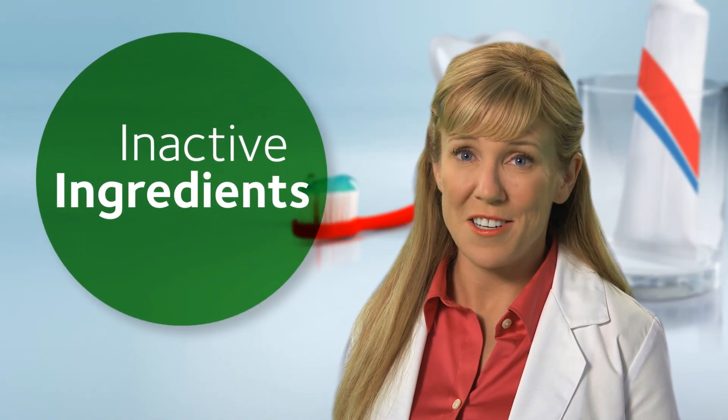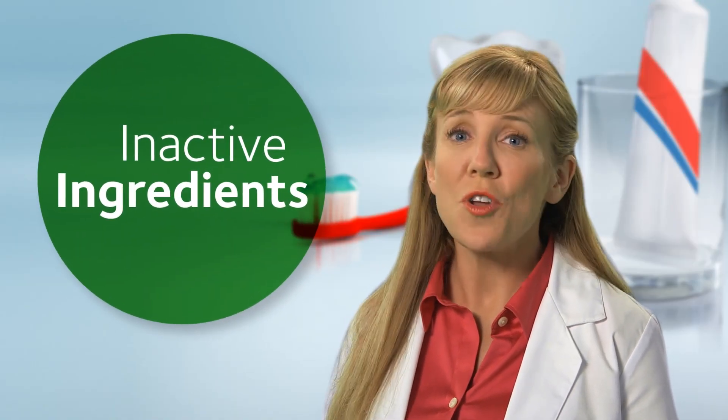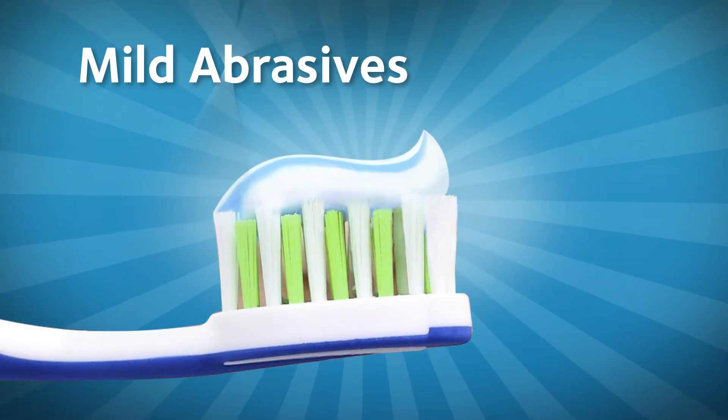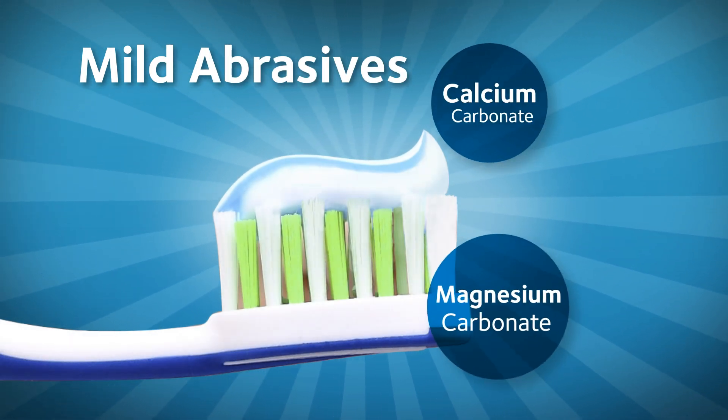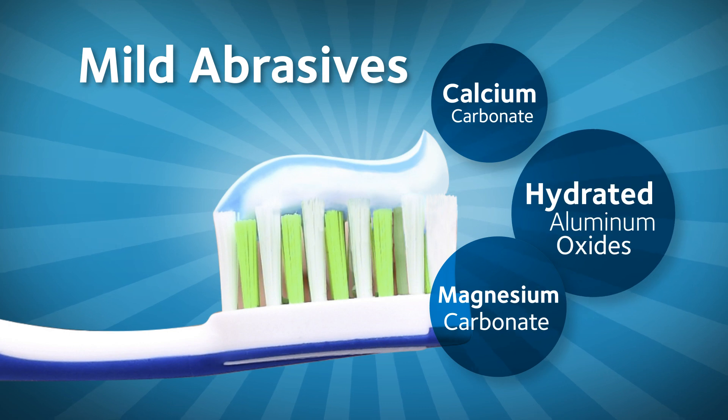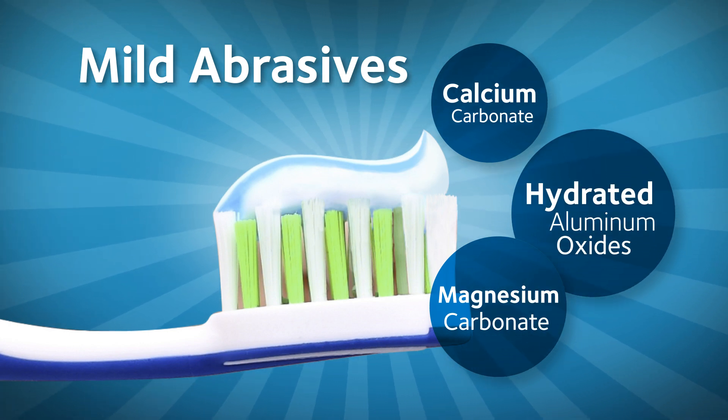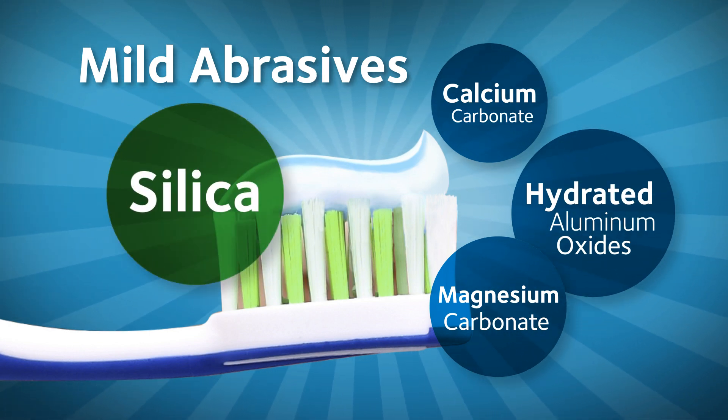There are also inactive ingredients common to all toothpastes. Whether it's a paste, gel, or powder, every toothpaste contains a cleaning and polishing agent to gently remove plaque, debris, and surface stains. In your toothpaste, those mild abrasives might be called calcium carbonate, magnesium carbonate, hydrated aluminum oxides, or most commonly, some form of silica.